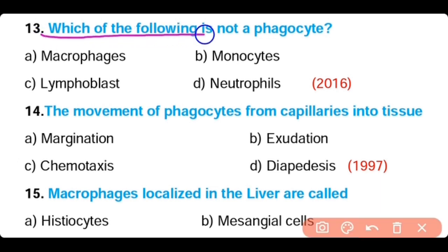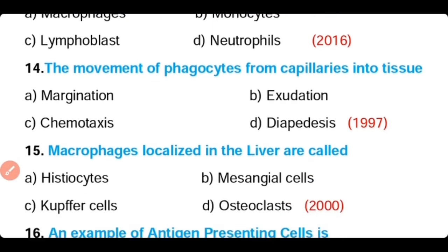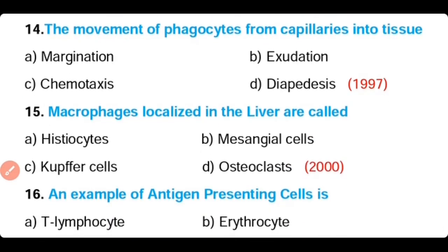Question number 13. Which of the following is not a phagocyte: macrophages, monocytes, lymphoblasts, or neutrophils? The correct answer is Option C. Lymphoblast is a naive lymphocyte; it is not a phagocyte.